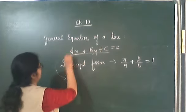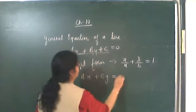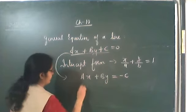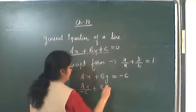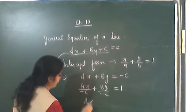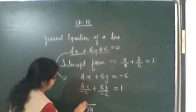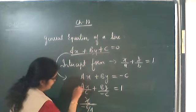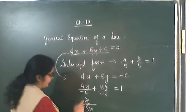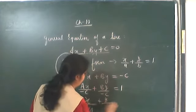To convert the general equation ax + by + c = 0 into intercept form, we rearrange to get ax + by = minus c, then divide the whole equation by minus c. This gives x upon (minus c by a) plus y upon (minus c by b) equals 1.